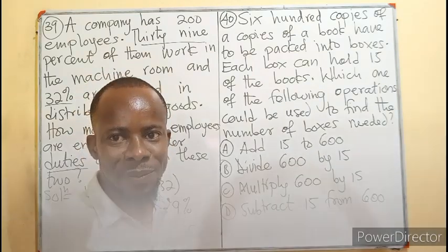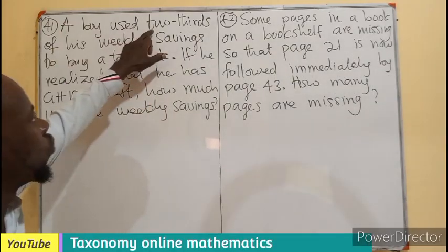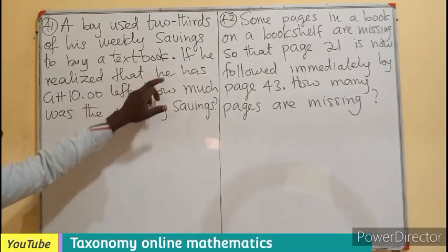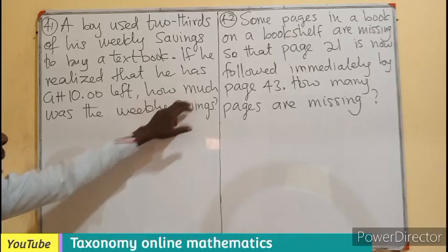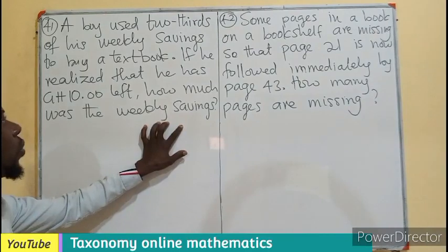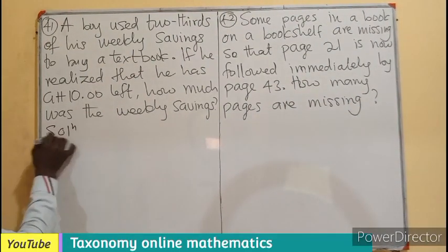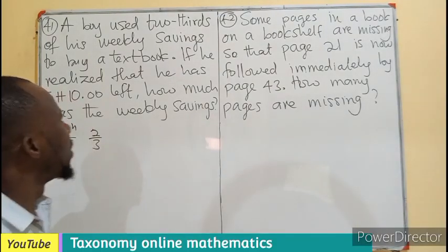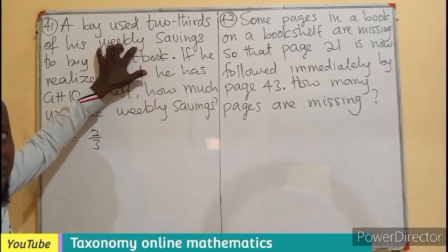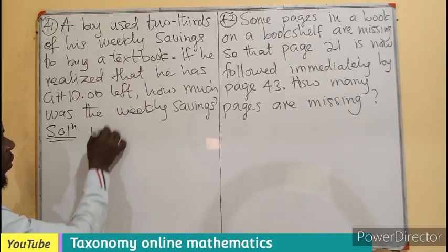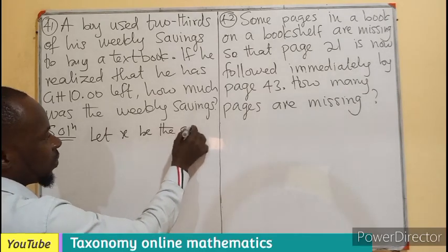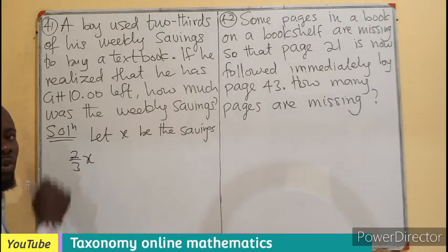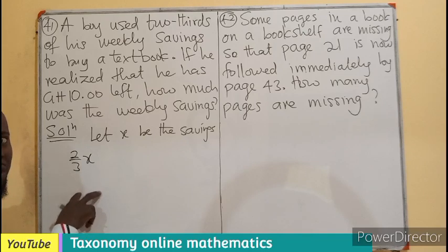Question 41: A boy used two-thirds of his weekly savings to buy a textbook. He found he had 10 dollars left. How much were the weekly savings? We know that 'two-thirds' means 2 out of 3. Let x be the savings. If he is using two-thirds of his savings on the textbook, then two-thirds times x gives the amount spent on buying the textbook.